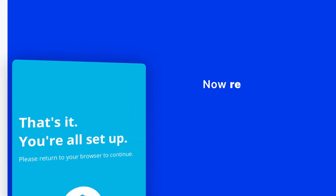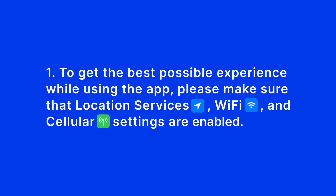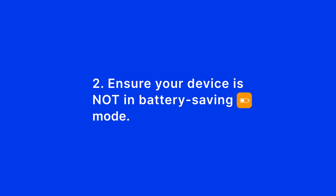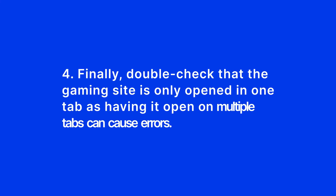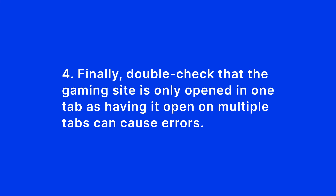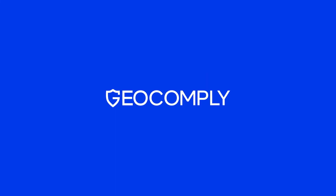Here are some tips. To get the best possible experience while using the app, please make sure that location services, Wi-Fi, and cellular settings are enabled. Ensure your device is not in battery saving mode. Be aware that browsers in private mode restrict location permissions. And finally, double check that the gaming site is only opened in one tab, as having it open on multiple tabs can cause errors. Thank you for watching!